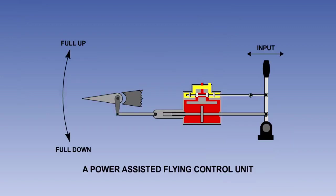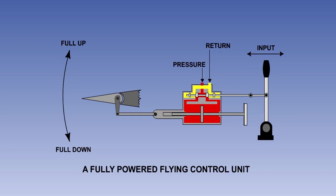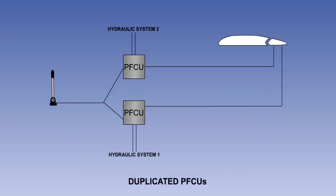That is the end of the lesson. You have learned that powered flying controls are operated hydraulically, that power-assisted systems are reversible and fully power-operated systems are non-reversible. You have also seen that powered flying control units are usually duplicated, with each unit being powered by a separate hydraulic system.